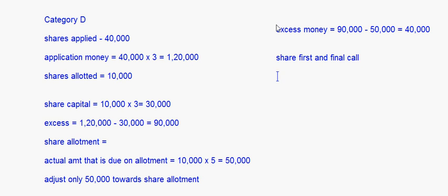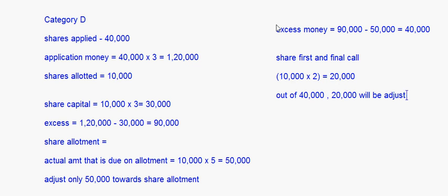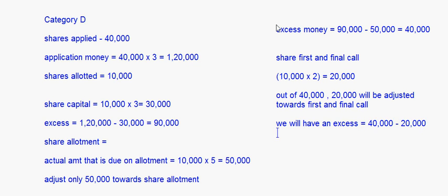Now for the first and final call, the amount actually due is 10,000 into 2 which equals 20,000. So out of the 40,000 remaining, 20,000 will be adjusted towards the first and final call. Even after this we have an excess of 40,000 minus 20,000 equals 20,000 rupees, which will be refunded to the applicants. Those are the four categories.